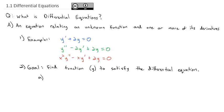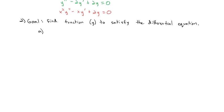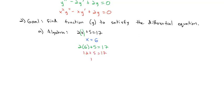This is similar to what we were trying to do in algebra. In algebra, we would solve equations like 2x + 5 = 17, and our goal was to find the x that made this a true equation. We did that by subtracting 5 and dividing by 2, finding x = 6. Being a solution meant plugging it back in gives a true equation: 2(6) + 5 = 12 + 5 = 17. The solution x = 6 satisfies that algebra equation.